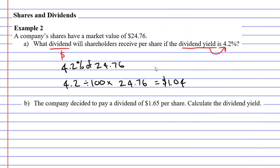This means for each share you own, you're going to receive a dividend of $1.04. Let's now move on to question B. The company decided to pay a dividend of $1.65 per share. Calculate the dividend yield.